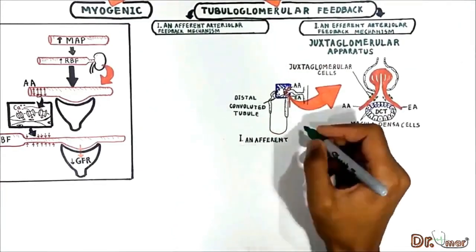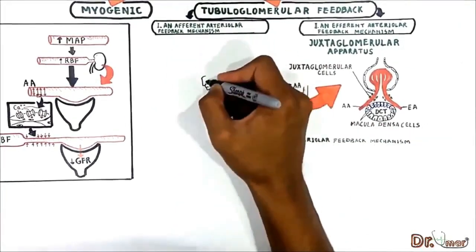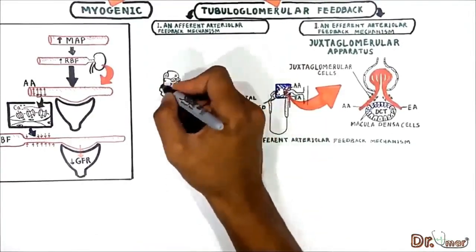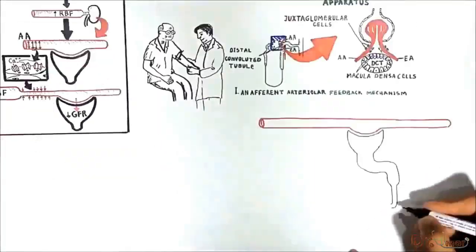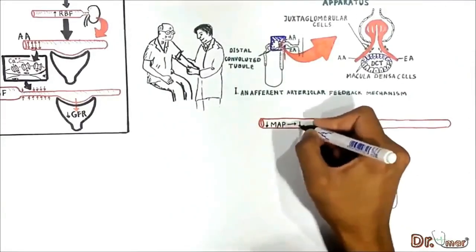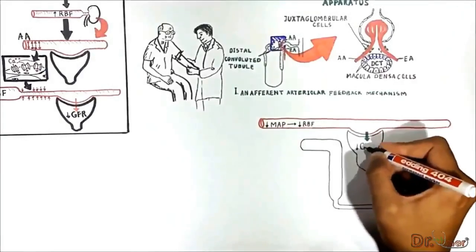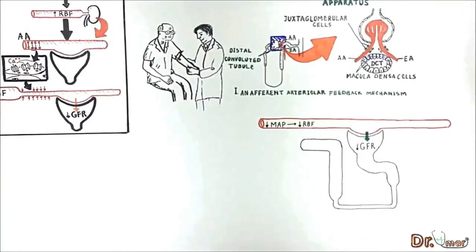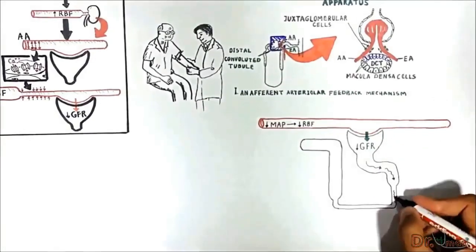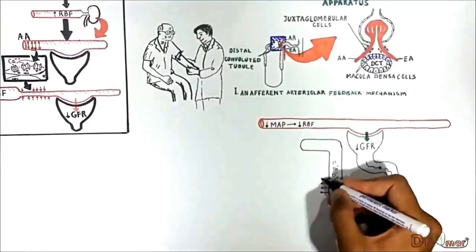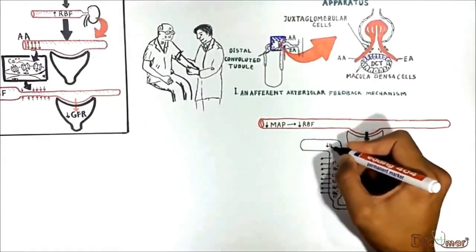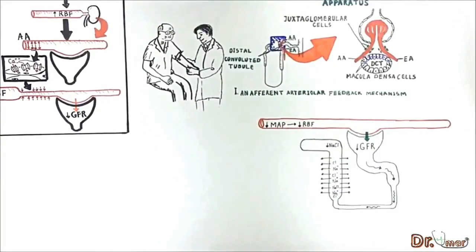Let's see how the afferent arteriolar feedback mechanism autoregulates renal blood flow and GFR when blood pressure decreases. When mean arterial pressure decreases, it leads to a decrease in renal blood flow and GFR for a short time. Decreased GFR slows the flow rate in the whole nephron, causing increased reabsorption of sodium and chloride ions in the ascending loop of Henle, thereby reducing the concentration of sodium chloride in the distal part of the tubule.